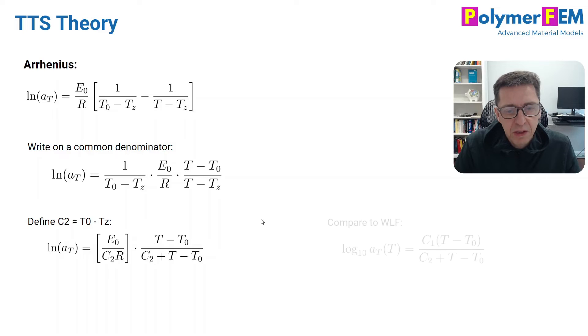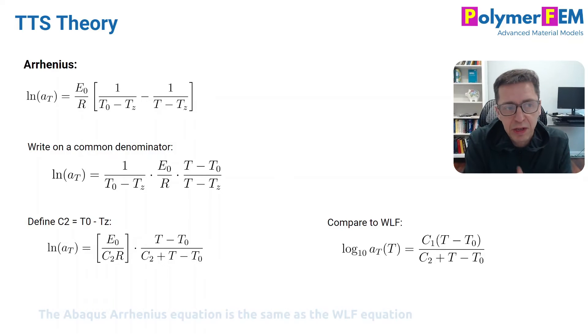Very interesting, isn't it? Of course, if we compare that to the WLF equation, we'll see that they are actually the same. We have a prefactor here, and we have a different logarithm, natural logarithm versus log10, but that's just a constant factor between them. So we end up here with the same equation. What I've shown here is that the Arrhenius equation, as implemented by Abaqus, is mathematically the same as the WLF equation.